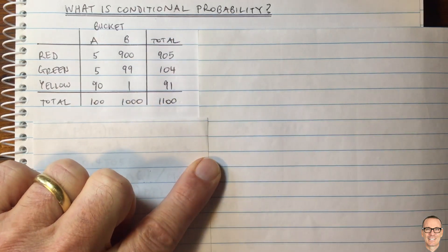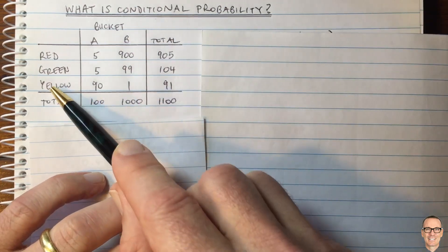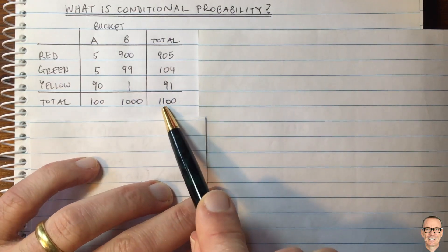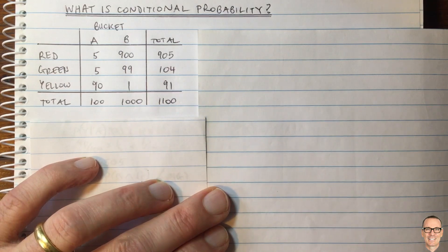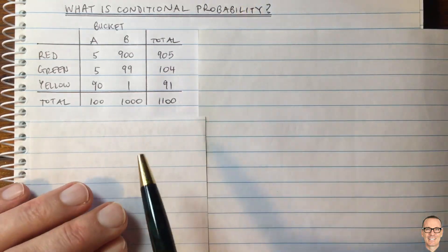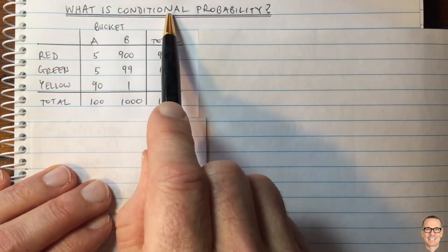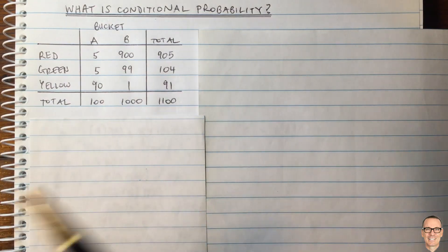If we look at this table, you might be tempted to think there's a total of 91 yellow balls and an overall total of 1100. So you might think the overall probability of getting a yellow ball is 91 out of 1100. And if you do that, you'd be being tricked because you wouldn't be taking into account the conditional nature of having had first to pick a bucket.